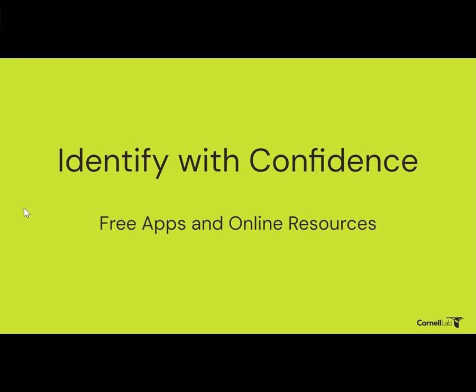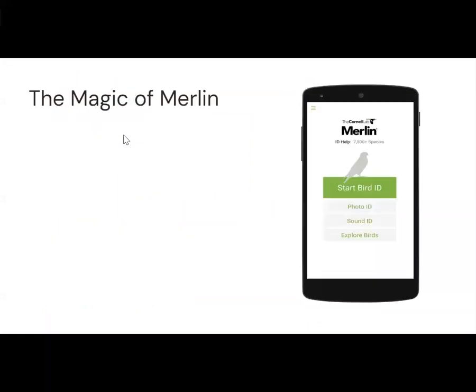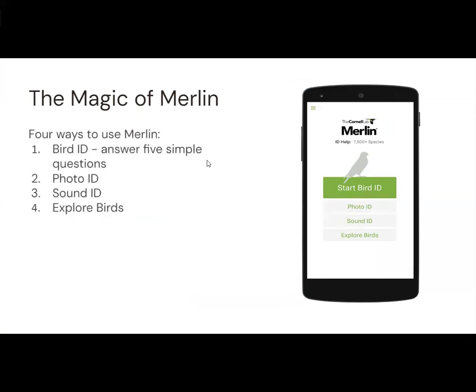Now that we've got those four clues down, let's talk about how we start applying them and what tools we have to help us identify birds with confidence. I've mentioned the Merlin Bird ID app a couple of times. It's available as a free app in the app store — it used to be online but is now app-only. The magic of Merlin is that it helps you identify birds in four ways: by answering simple questions, using a photo ID tool, a sound ID tool, or using the explore birds tool. I'd like to demo some of Merlin with you.